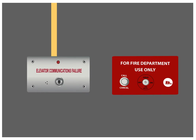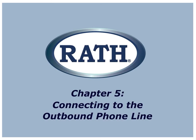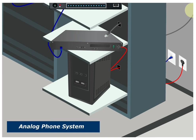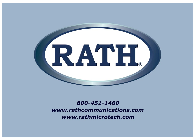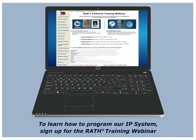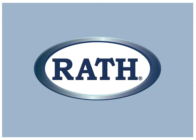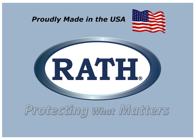Chapter 5: Connecting to the Outbound Phone Line. If you are connecting to an analog phone line, take the RJ11 connection on the analog communication line from the existing phone system to the TWT port within the command center distribution module. If you are using an extension off an existing IP phone system, it requires an additional 2100 VOIP-M, which would be registered as a third-party SIP endpoint. Connect the FXS port of the 2100 VOIP-M to the TWT port of the distribution module. If you have any questions or require further information, please contact RATH directly. To learn how to program our IP system, sign up for our technical training webinar. Our dependable, high-quality, made-in-the-USA products are truly protecting what matters.